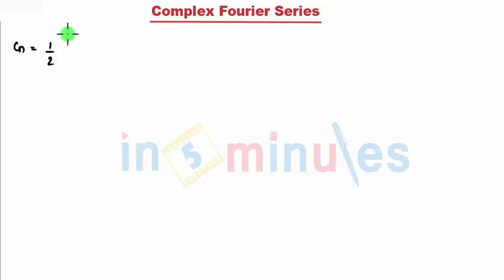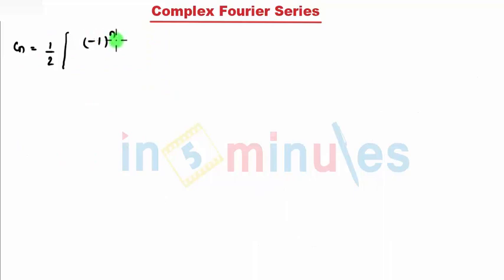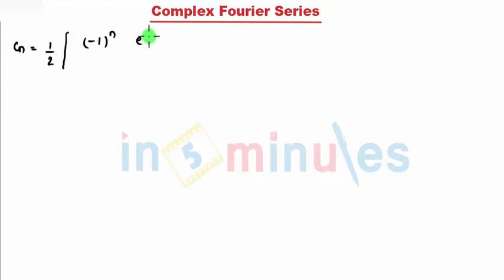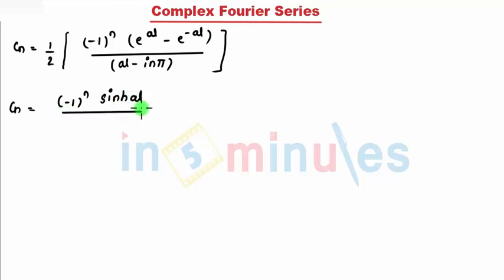Now I apply the identity: e^(minus i n π) = e^(i n π) = (minus 1)^n. So I write (minus 1)^n times (e^(aL) minus e^(minus aL)), divided by (aL minus i n π). Recognizing that e^(aL) minus e^(minus aL) equals 2 sinh(aL), I get c_n equal to (minus 1)^n times sinh(aL), divided by (aL minus i n π).